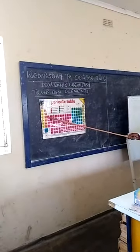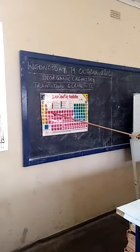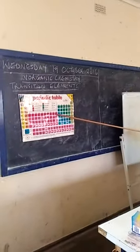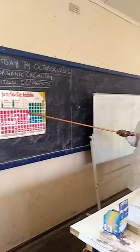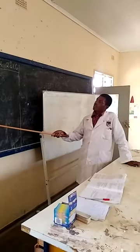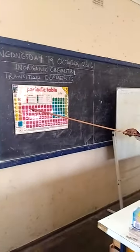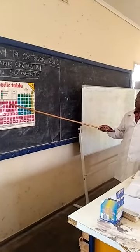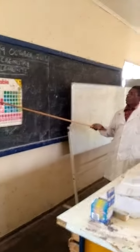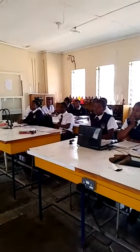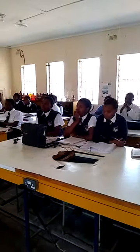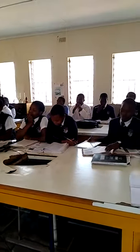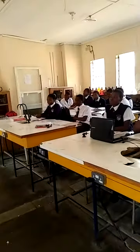We have got the Transition Elements from Scandium to Zinc. These are the first series Transition Elements: Scandium, Titanium, Vanadium, Chromium, Manganese, Iron, Cobalt, Nickel, Copper, and Zinc. We are going to start with those first series Transition Elements.